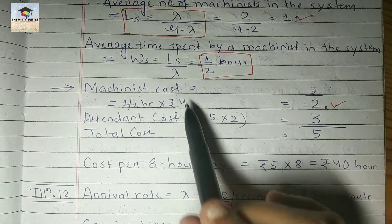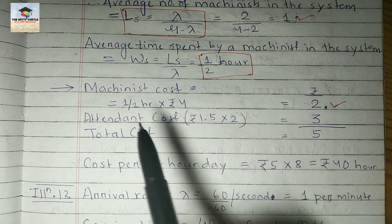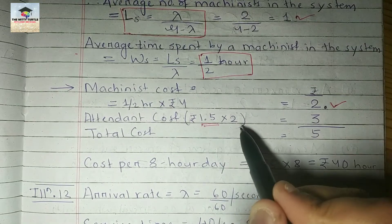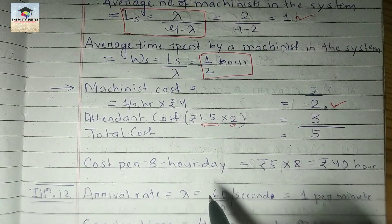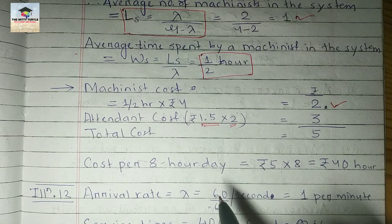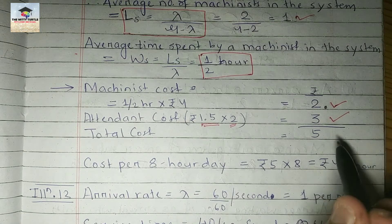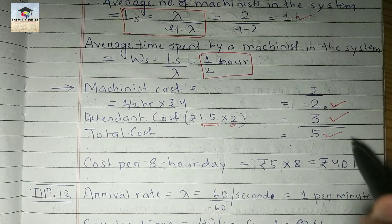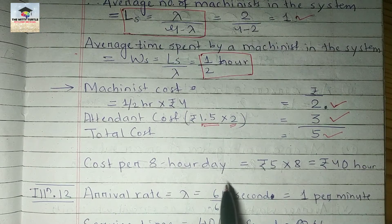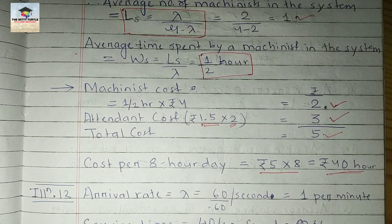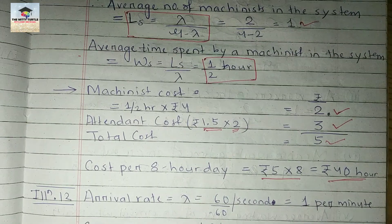Then the attendant cost will be, you need to remember that here only one machinist is there. Attendant cost will be 1.50 multiplied by 2, because there are 2 attendants, so it will be rupees 3. The total cost will be 5. So cost per 8-hour day will be rupees 5 times 8, that will be 40 rupees.